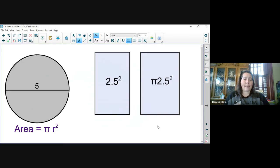Let's look at our first example. In this example, we have a diameter of 5. To find the radius, we have to divide that in half. So half of 5 is 2.5.